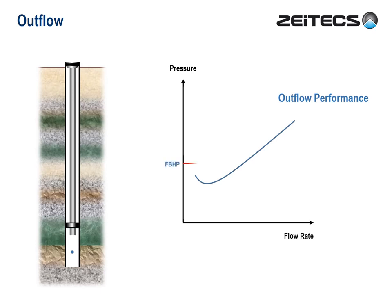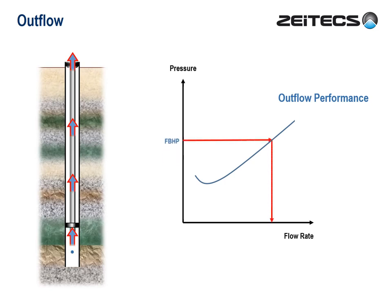A certain flowing bottom-hole pressure will drive fluids to surface at a certain rate. Higher flowing bottom-hole pressure, higher rate. Simple. But the really cool thing here is that all relevant wellbore and fluid properties are built into this line — again, the PVT properties of the fluid, the temperature profile, conduit properties and tubing head pressure are all considered. Again, we have a very simple, but a very powerful tool.